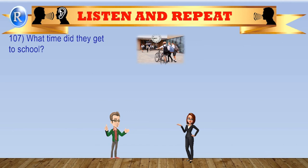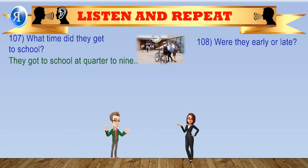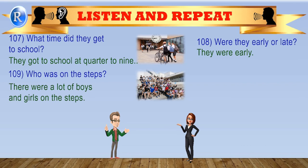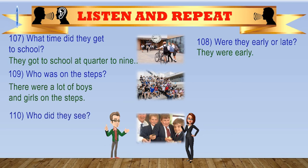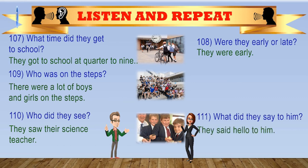What time did they get to school? They got to school at quarter to nine. Were they early or late? They were early. Who was on the steps? There were a lot of boys and girls on the steps. Who did they see? They saw their science teacher. What did they say to him? They said hello to him.